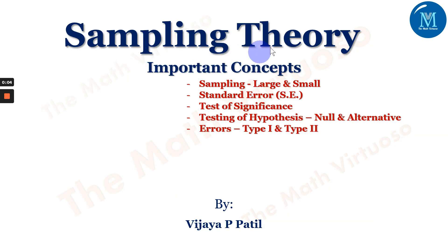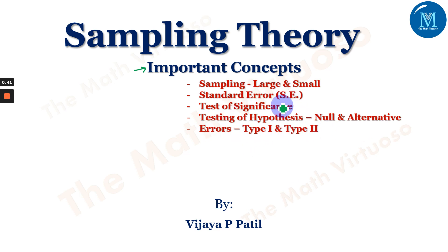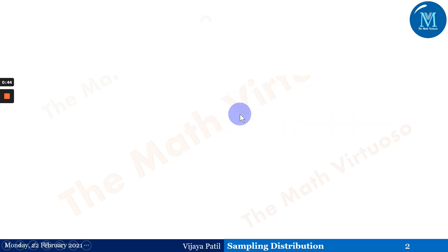Hello and namaste. In continuation of the sampling theory, we are dealing with important concepts. In the last session we defined and explained population, sample, statistical inferences, parameters, and statistics. You can click the info button to access that session. In today's session we'll be dealing with sampling — large and small sample — standard error, test of significance, testing of hypothesis, null and alternative hypothesis, and Type 1 and Type 2 errors.